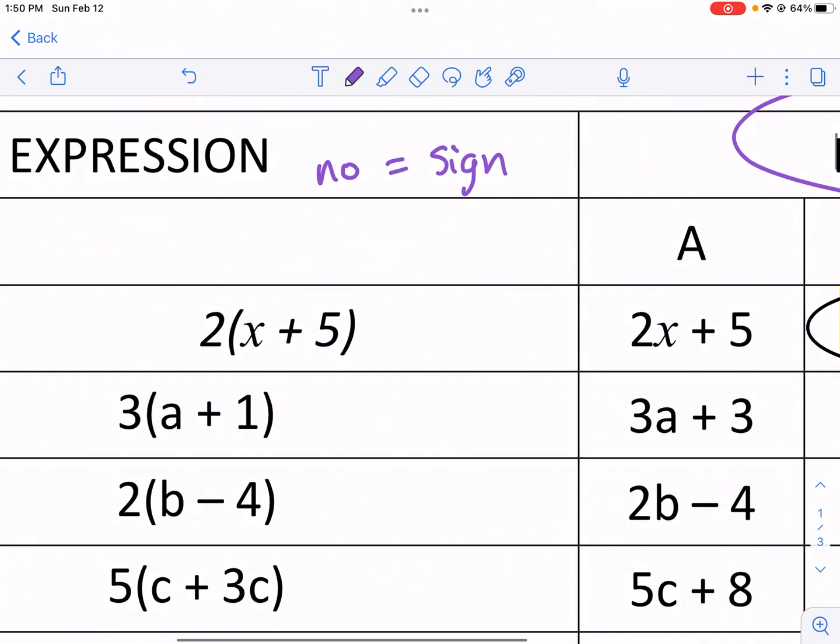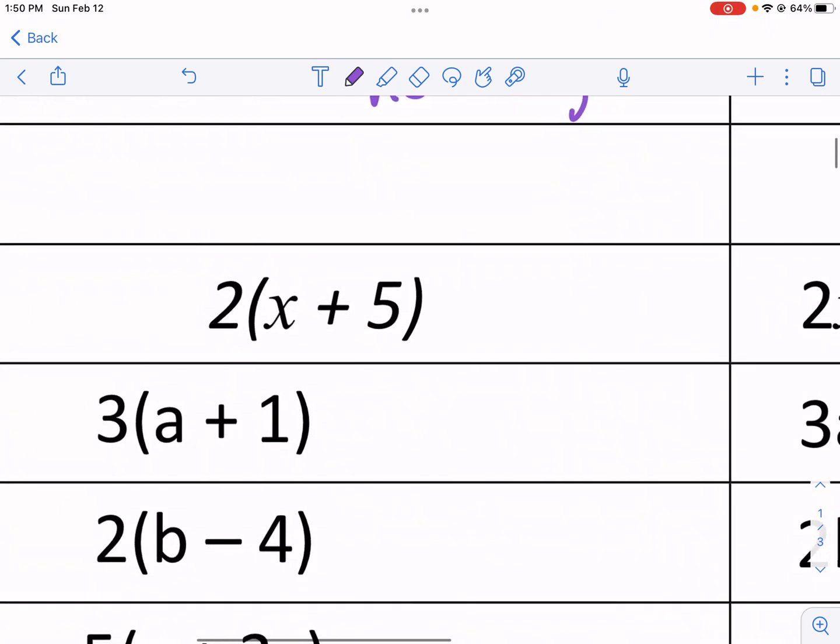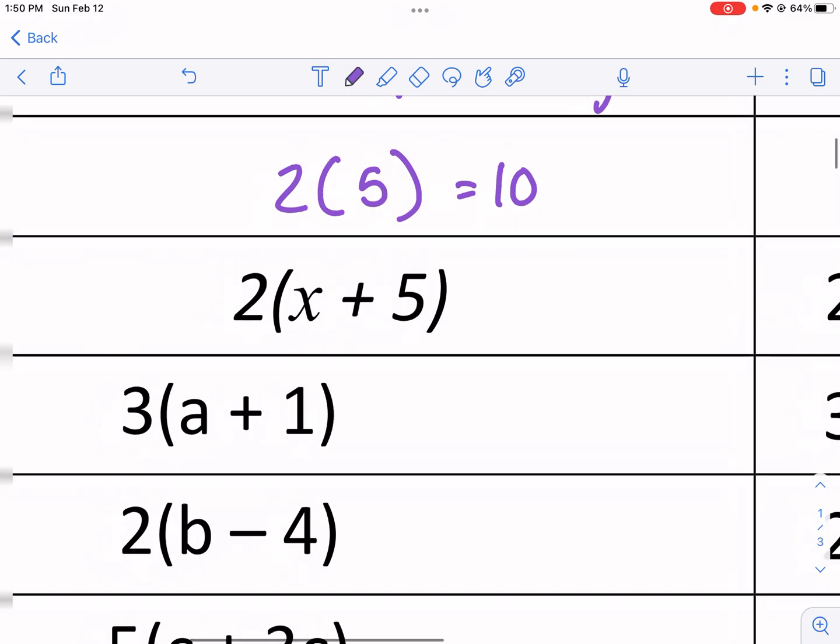Well, the distributive property, if you think about distributing, that means, like, distributing cards. You pass it out equally to everything. So we have this 2 on the outside, and we know that if we have something like this, it means multiplication. 2 times 5, 10. But notice how we can't add x plus 5. They're two different things. The 5 doesn't have an x. That 5 is a constant. The x is a variable, so we can't combine those. So there's nothing to do inside the parentheses as order of operations would suggest.